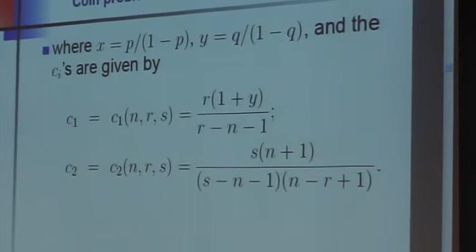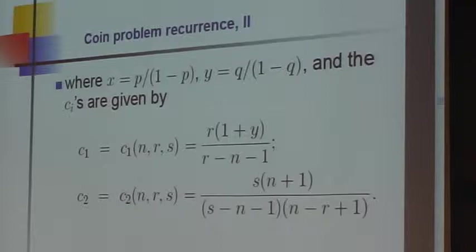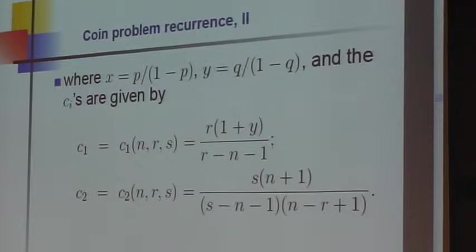So there is a recurrence for the summand that occurs in this coin toss problem. I should say this recurrence has the following property: in a million years I could never have found this recurrence by hand.